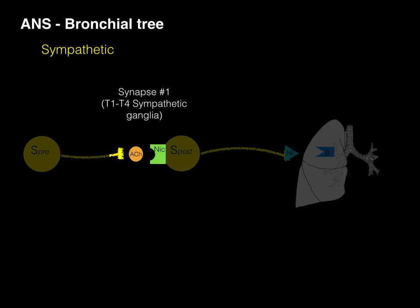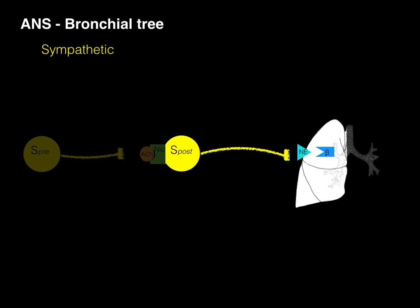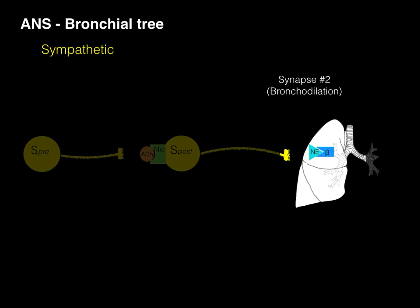Acetylcholine will bind to a cholinergic receptor — specifically the nicotinic receptor — and when it binds, it continues its impulse down S-post, which is our sympathetic postganglionic neuron. That impulse travels all the way down to the terminal axon and releases norepinephrine into that second synapse. Norepinephrine is then going to bind to a beta adrenergic receptor on that smooth muscle, where synapse number two occurs, resulting in bronchodilation.